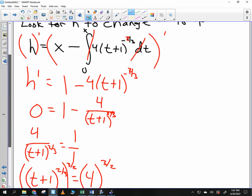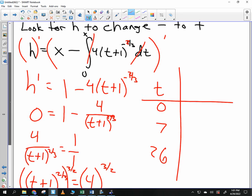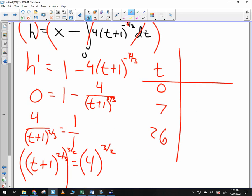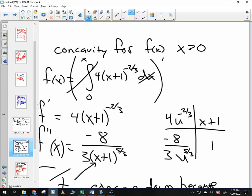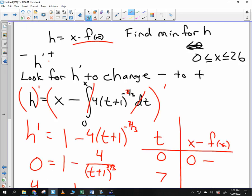So what we need to do is we need to consider certain values. We're going to consider 0, 7, and 26. Why am I considering 0 and 26? Yeah, those are the end points, right? When it says find the overall minimum or maximum, we need to consider the end points as well. It says h of x is equal to this guy right there. So I'm going to go x minus f of x. So if I plug in 0, I get 0 minus, let's look back at my function f. If we go 0 to 0 on an integral, what do you get? 0. So good. We've got this value being 0 as well.